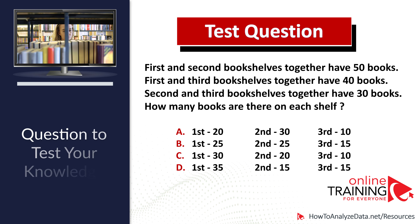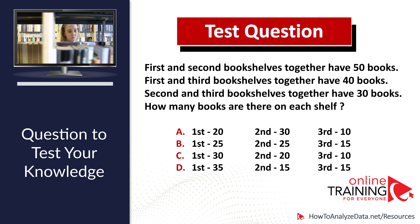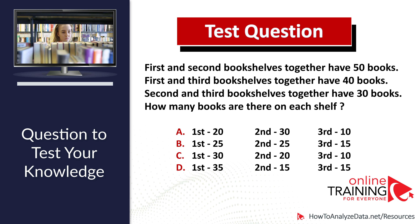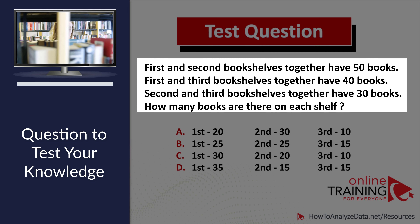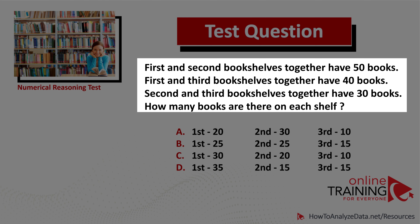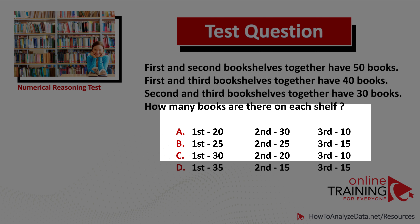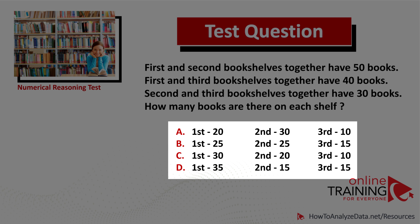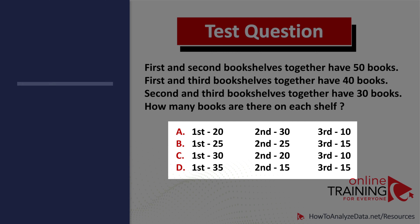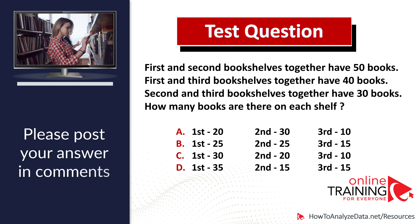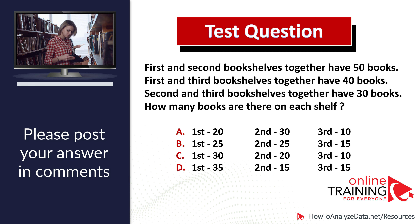Here is a question for you to try. First and second bookshelves together have 50 books. First and third bookshelves together have 40 books. Second and third bookshelves together have 30 books. How many books are on each shelf? Choices — A: 20, 30, 10; B: 25, 25, 15; C: 30, 20, 10; D: 35, 15, 15. Please post your answer in the comment section and I or other experts will reply with the correct answer.